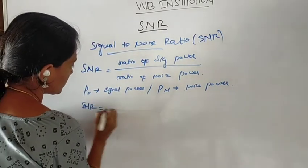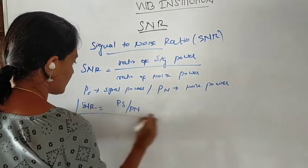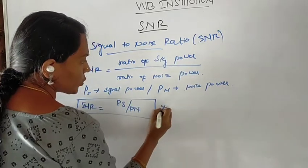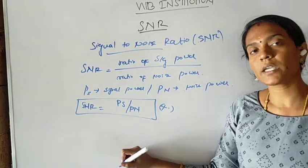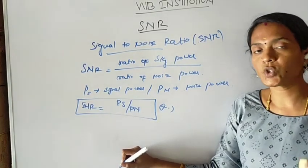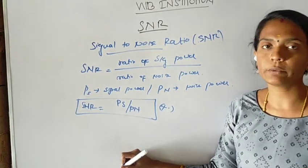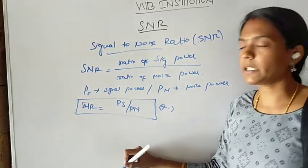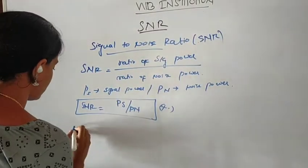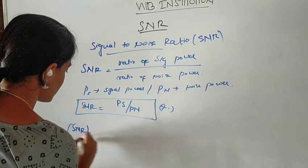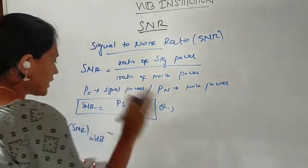SNR is equal to PS divided by PN. This formula is important. In terms of dB, SNR in dB is represented by the following equation.